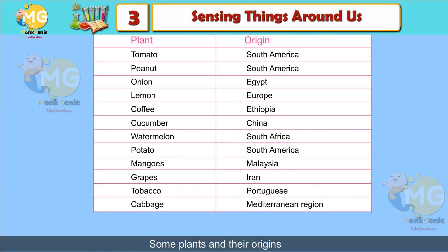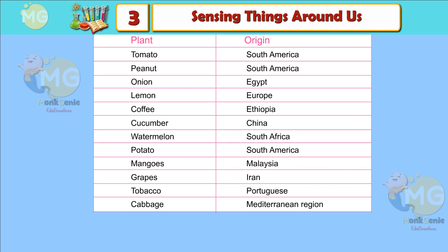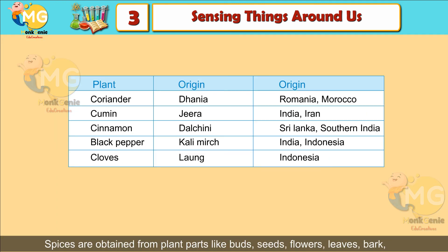Plants from different countries: all fruits and plants that we see did not originate in India — many originated in other countries. For example: tomato and peanut originated in South America; onion in Egypt; lemon in Europe; coffee in Ethiopia; cucumber in China; watermelon in South Africa; potato in South America; mangoes in Malaysia; grapes in Iran; tobacco in Portugal; and cabbage in the Mediterranean region.